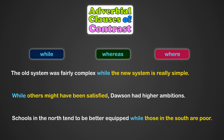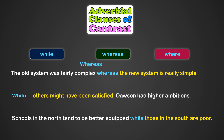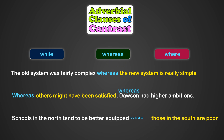Now we can replace the subordinate conjunction 'while' with 'whereas.' 'The old system was fairly complex, whereas the new system is really simple.' 'Whereas others might have been satisfied, Dawson had higher ambitions.' 'Schools in the north tend to be better equipped, whereas those in the south are poor.'